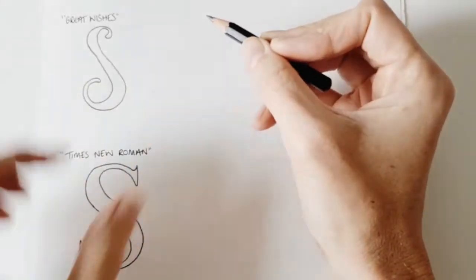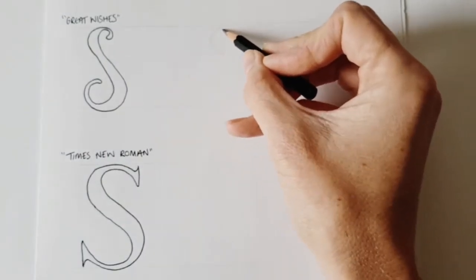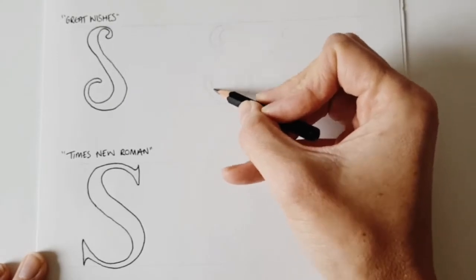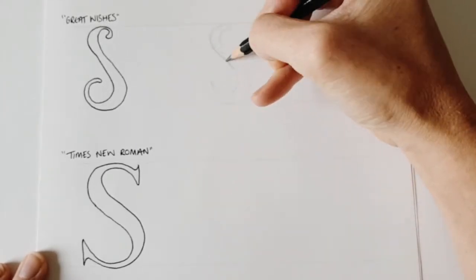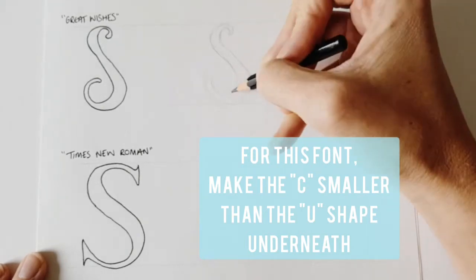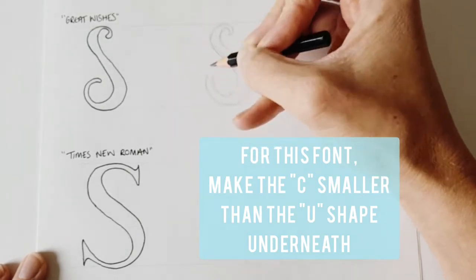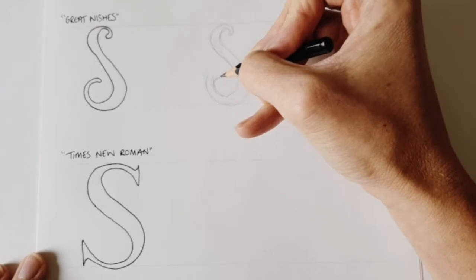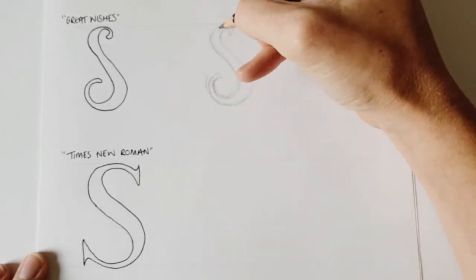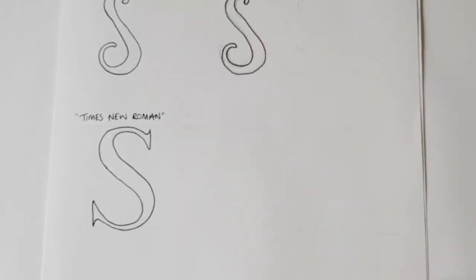Just to prove that the theory works with other font styles, here I'm just showing you the style of Great Wishes, which is a bit more like a handwritten style of lettering. It's much more fluid and curly, but again, sketching that C shape on the top, even though it's quite small, and the U shape underneath is the same principle. You sketch those two forms, then join them up.